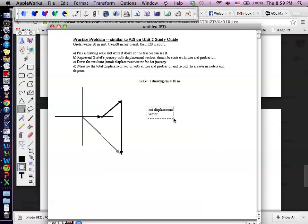Let me just move this over. I love working with Appleworks. Okay. D. Measure the total displacement vector with a ruler and protractor. Yet again, I don't have one. You should measure the length of this line. And with a protractor, I would measure that angle.